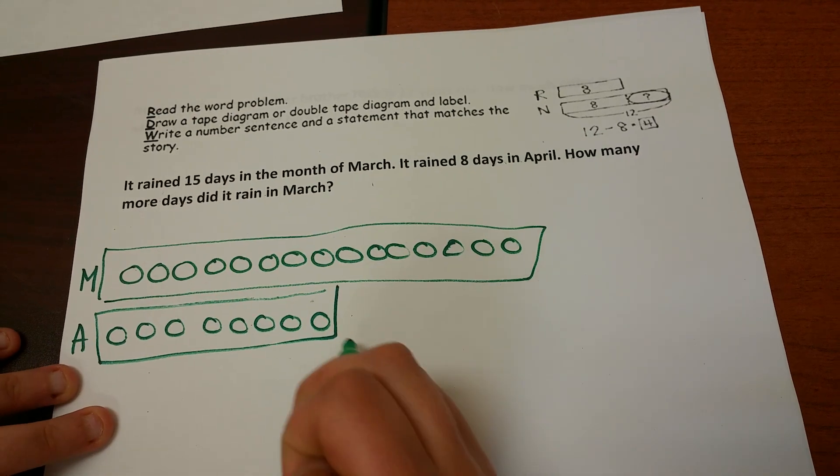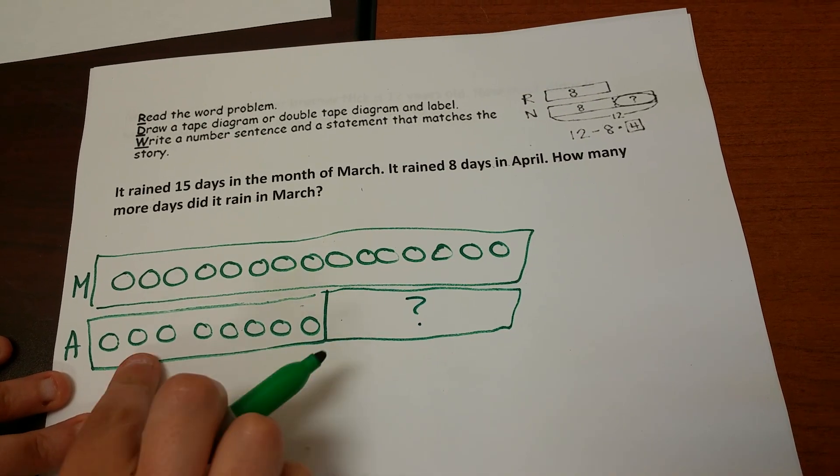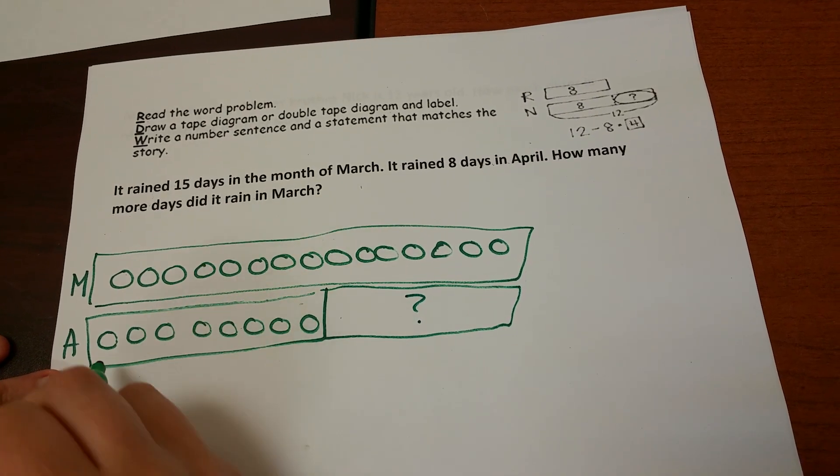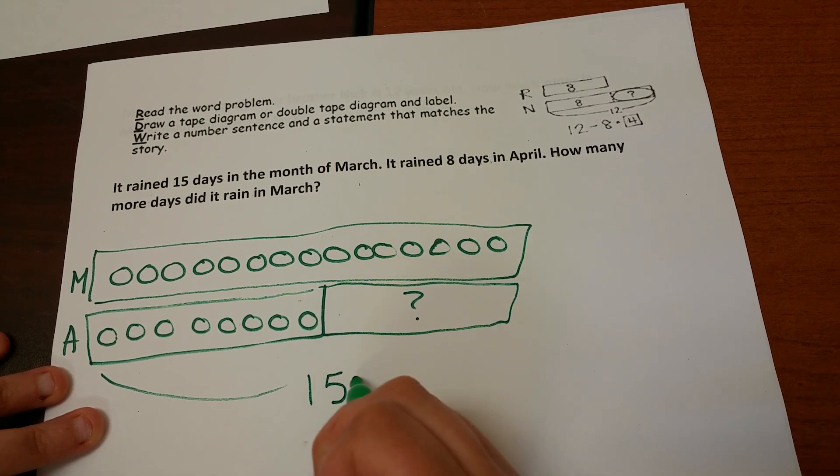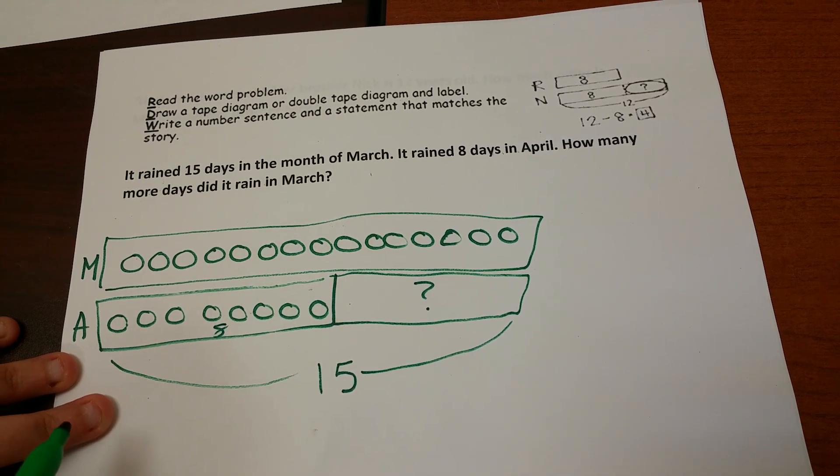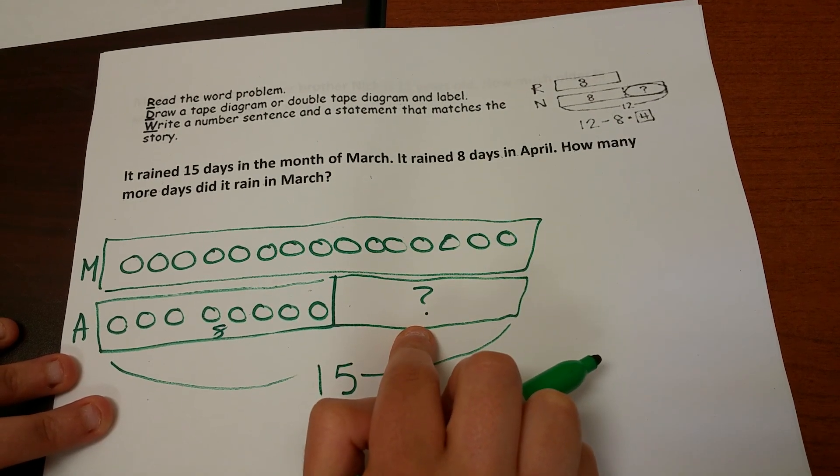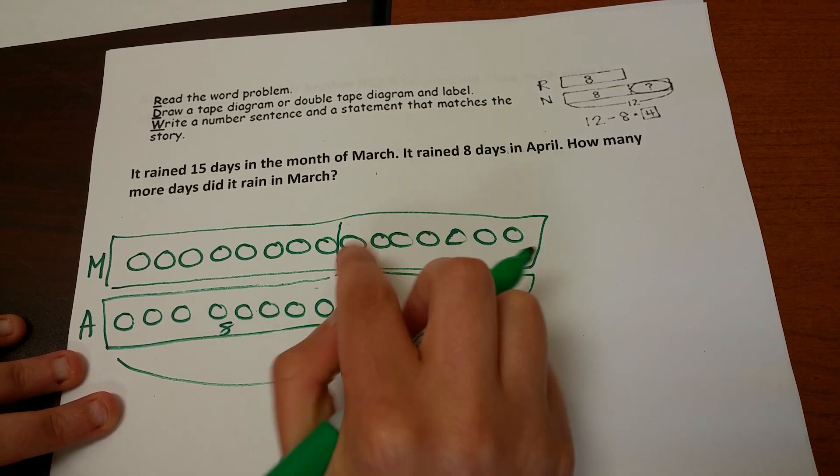The problem is asking how many more days did it rain in April than March. So knowing that my total is going to be 15, I have 8 here for April, how many more do I need? To figure it out, I'm going to draw my line up so I can compare them.